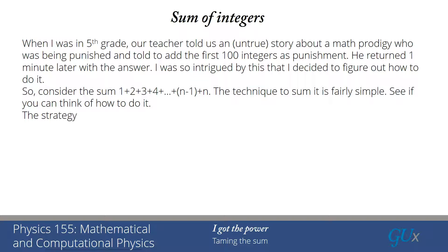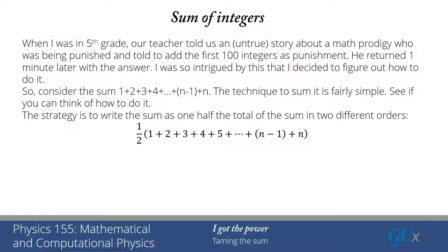Okay I hope you've been able to come up with an idea. This is the way that I know to do it. We write the sum as one half the total of the sum written in two different orders. The first one is just one half the sum written in the ordinary order and the second way is one half of the sum written in the reverse order.